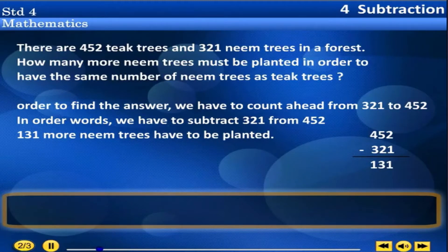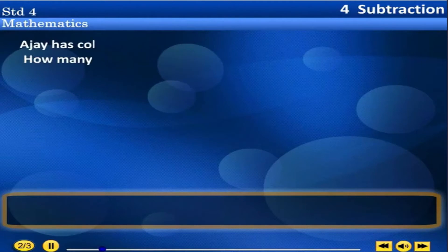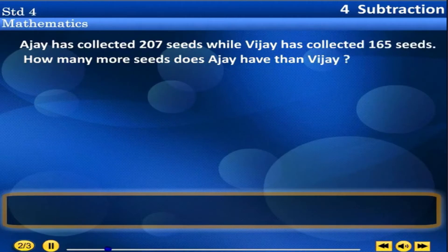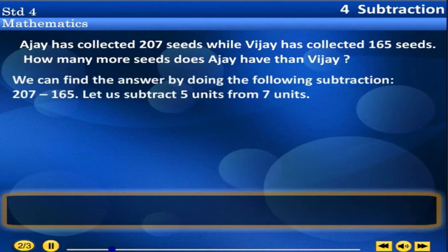131 more neem trees have to be planted. Problem 2: Ajay has collected 207 seeds while Vijay has collected 165 seeds. How many more seeds does Ajay have than Vijay?